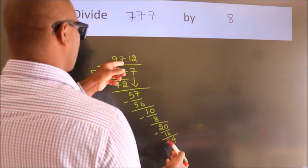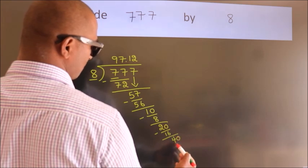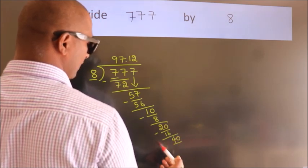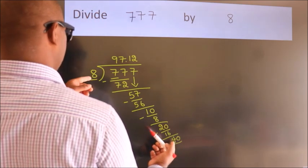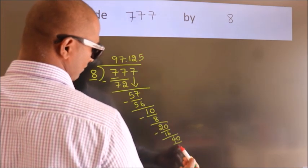After this, we already have the decimal. So directly take 0. So 40. When do we get 40 in the 8 table? 8 fives, 40.